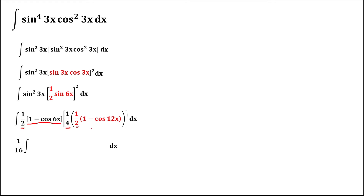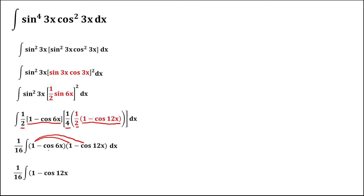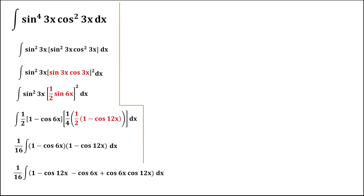So we have 1/16 times the integral. Using the FOIL method to multiply (1 − cos(6x))·(1 − cos(12x)): 1·1 = 1, 1·(−cos(12x)) = −cos(12x), (−cos(6x))·1 = −cos(6x), and (−cos(6x))·(−cos(12x)) = +cos(6x)·cos(12x), then dx.